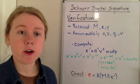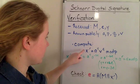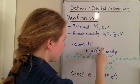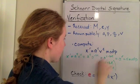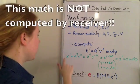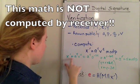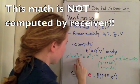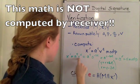So what we have to do to verify is first we have to compute this x prime value, which equals a to the y times v to the e mod p. And now what I did here is I just worked the math, where I copied it down here, and then I substituted the v.